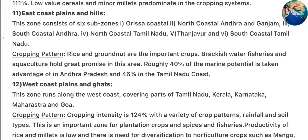Zone 11 – East Coast Plains and Hills: This zone consists of 6 sub-zones: Orissa Coastal, North Coastal Andhra and Ganjam, South Coastal Andhra, North Coastal Tamil Nadu, Tanjavur, and South Central Tamil Nadu. Cropping pattern: rice and groundnut are important crops. Brackish water fisheries and aquaculture hold great promise. Roughly 40% of the marine potential is utilized in Andhra Pradesh and 46% along the Tamil Nadu coast.